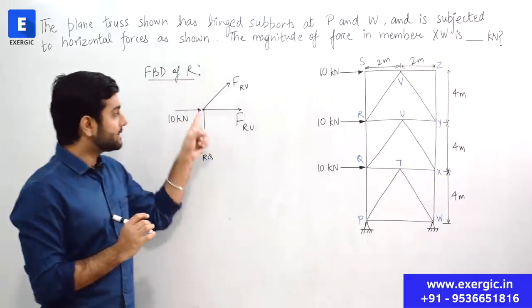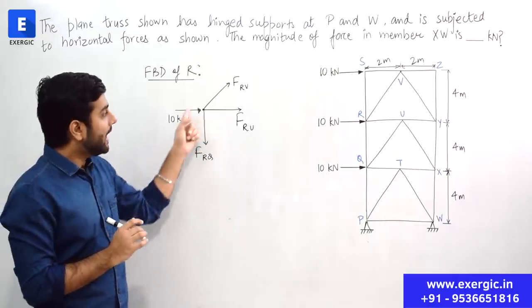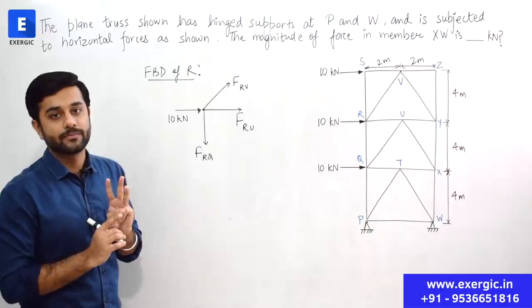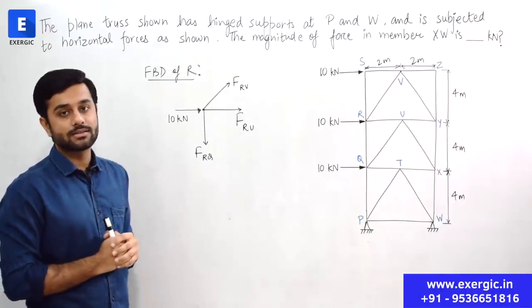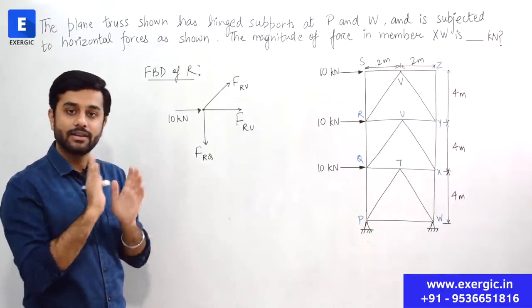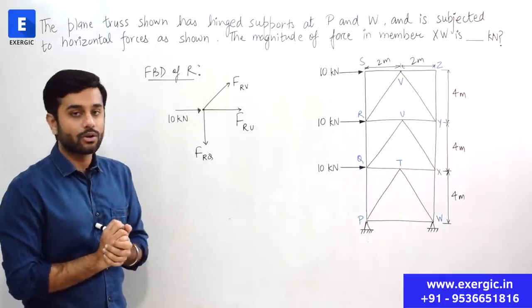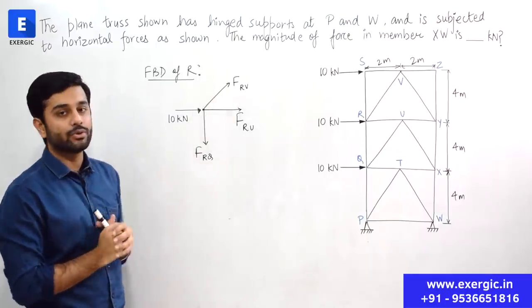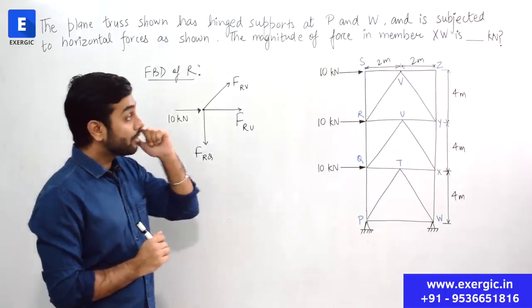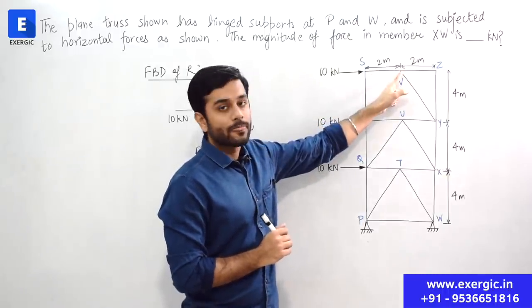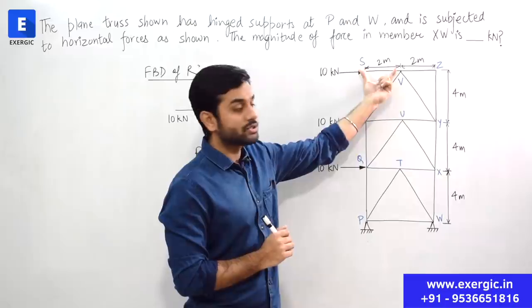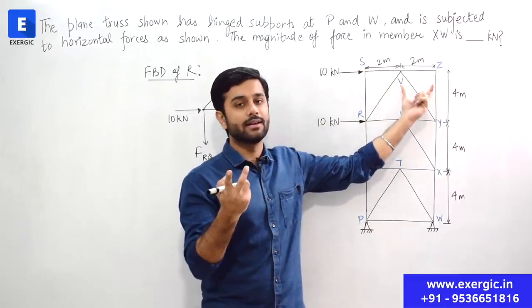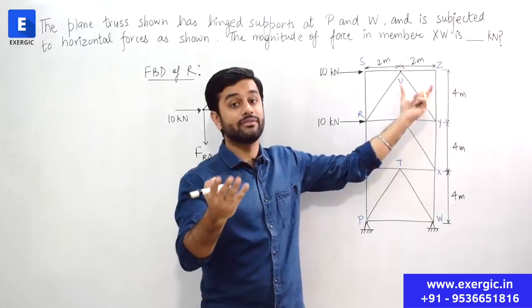I am going to reject the method of joints here because I know it is a very bad choice for this question. At point R, Frv, Fru, and Frq are three unknowns with only two equations. Maybe you can find Frv, but you still need to keep analyzing joint after joint. We have already analyzed four joints and are still not close to the answer. You came to point R, found Rv, then found Ru and RQ. Now at point Q, RQ is known but other forces are still unknown.